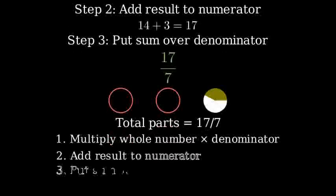So remember to convert a mixed number to an improper fraction. First multiply the whole number by the denominator, then add the numerator, and finally put that sum over the original denominator.